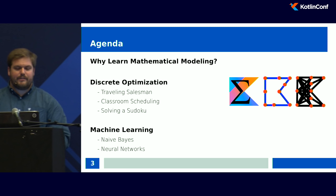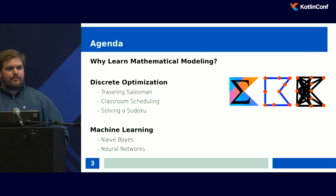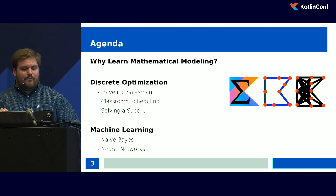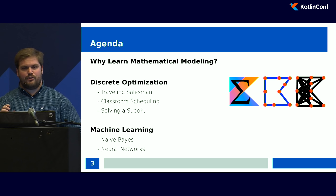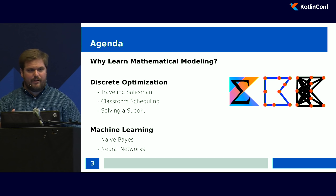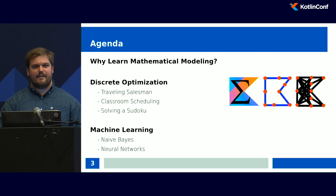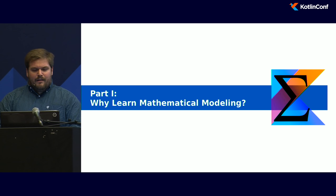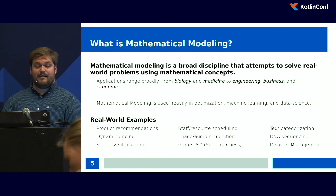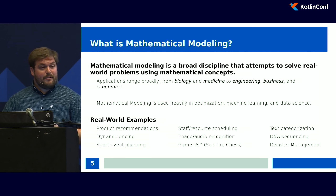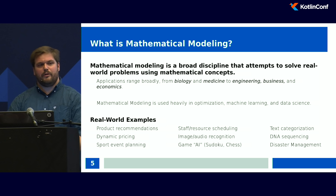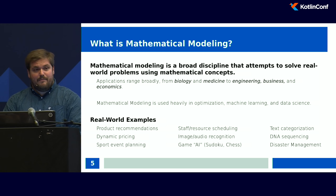This is the agenda for today. We are going to talk about why mathematical modeling, then go into two topics: discrete optimization as well as machine learning, and talk about how these two domains are related. I have a few slides to show the concept and deconstruct the algorithms, using a mixed approach of libraries and building from scratch. I'll try to open up the black boxes as much as I can. Mathematical modeling is used in a wide range of applications and industries from biology to medicine to engineering, business, and economics. It is also the backbone to optimization, machine learning, and data science.